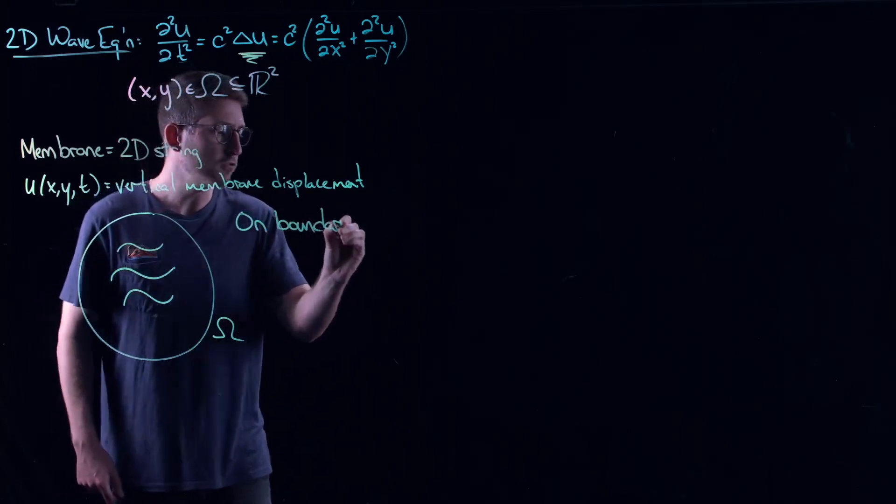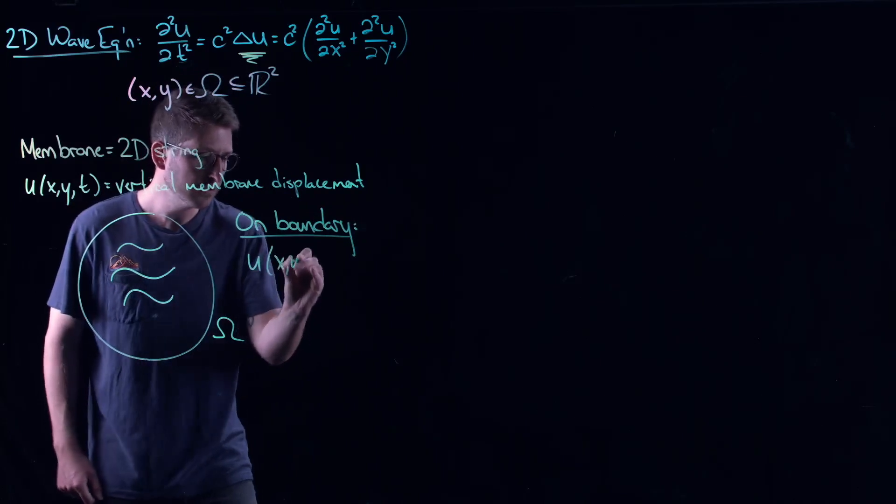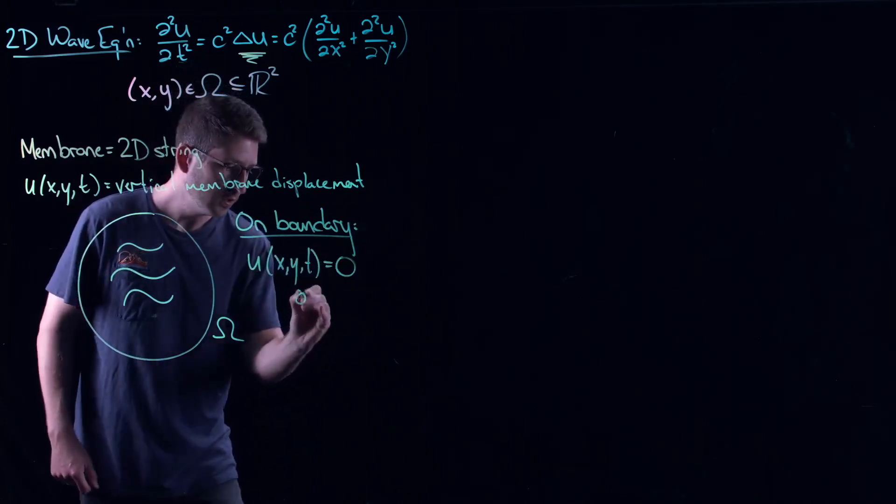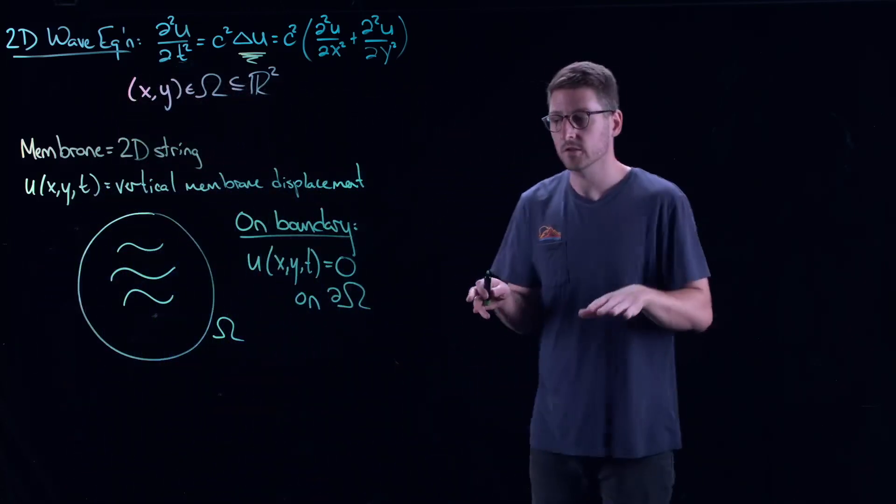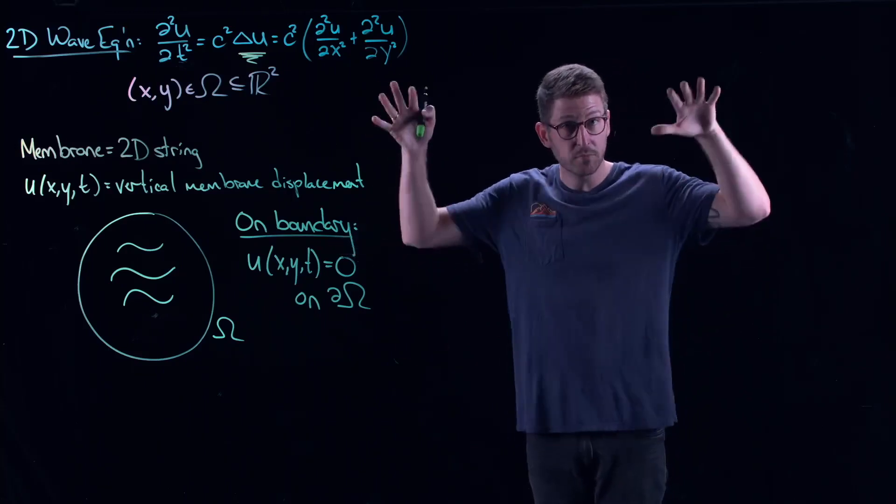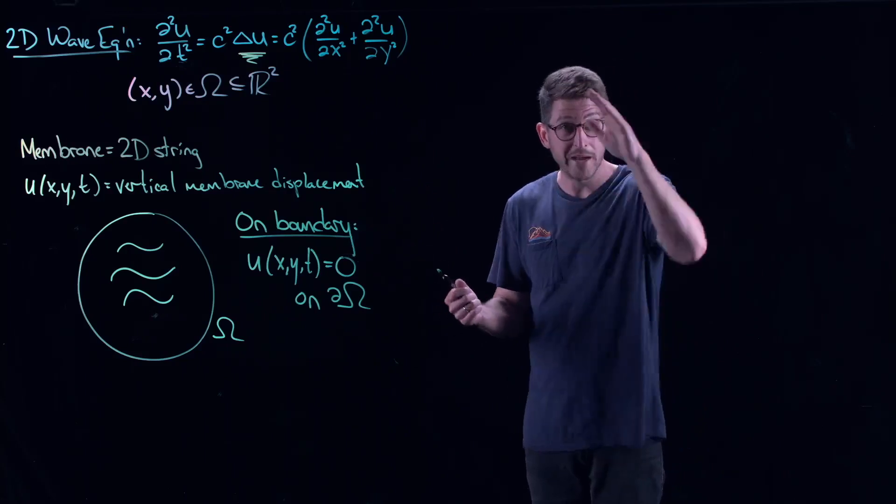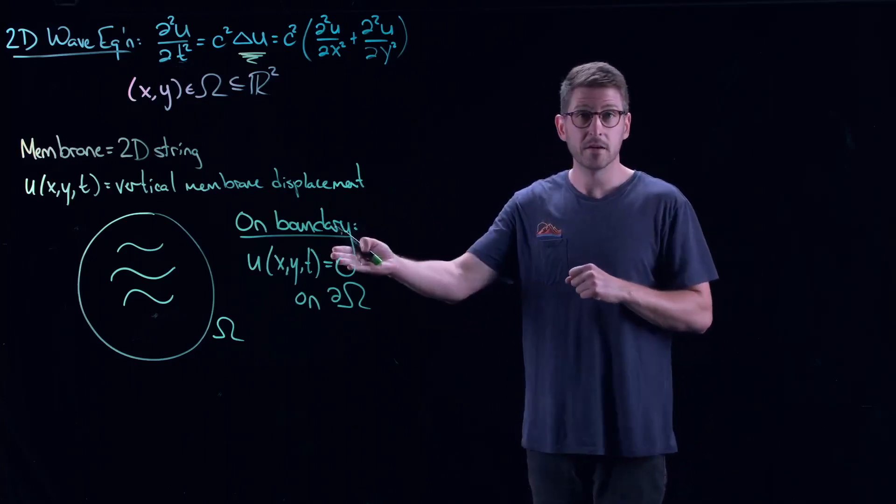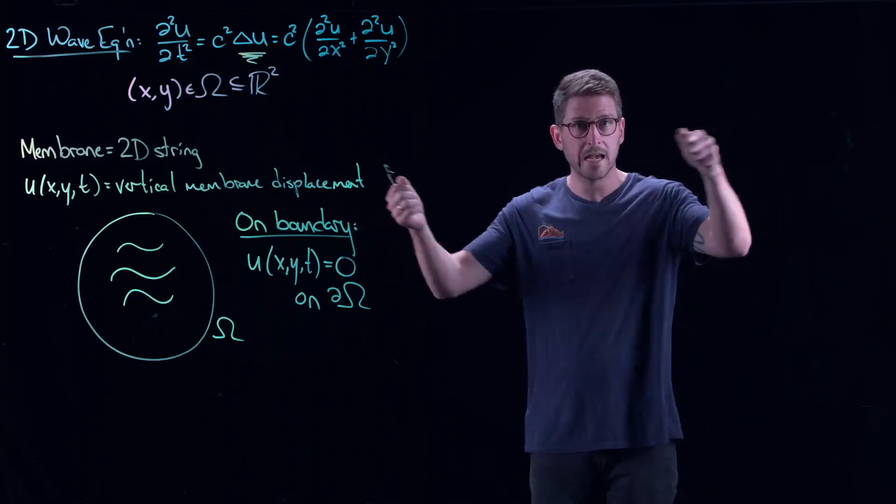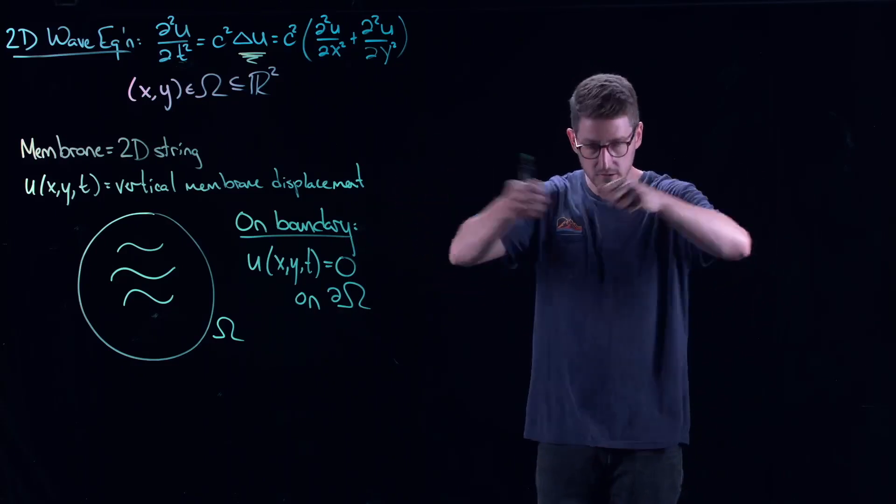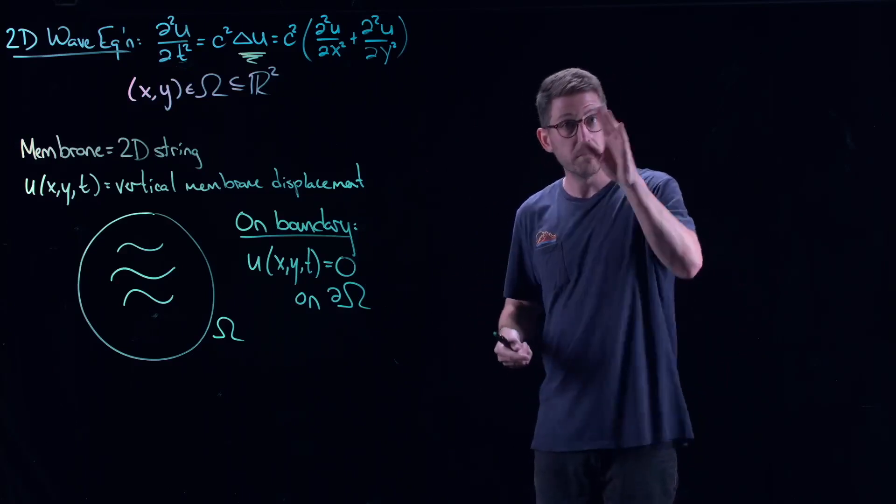So your disturbances could be your actual jumping on the trampoline. This could be your omega. And then on the boundary, what would be the boundary conditions for jumping on a trampoline? Well, this would be that u of x, y, t is equal to zero on the boundary of omega. And that would be your sort of fixed boundary conditions.